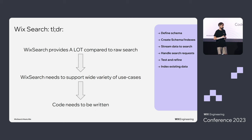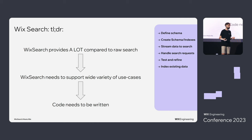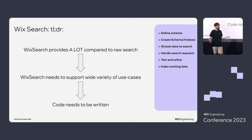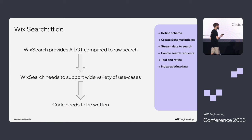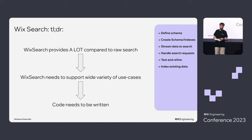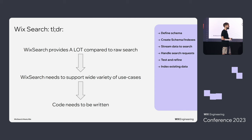To wrap up: Wix Search is a platform with a lot of functionality to cover many different use cases. You get a lot of features basically for free — but you do need to write code. Spreadsheet for schema — not a huge fan but can do it. Couple of services to spawn, and some mapping code. I think I can do it. I'm off to implementing.